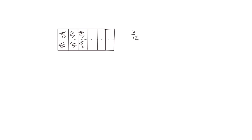So we started with six twelfths. But now if we look at this part as a larger unit, we see that if we look at the larger units we really have halves. So half of the whole is shaded. If we look at this larger unit, half is not shaded. So it looks like six twelfths is equal to one half based on our area model.